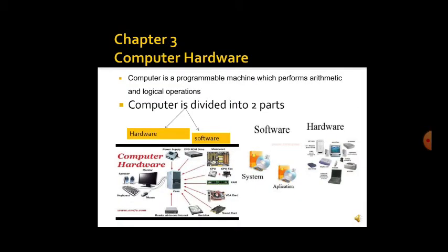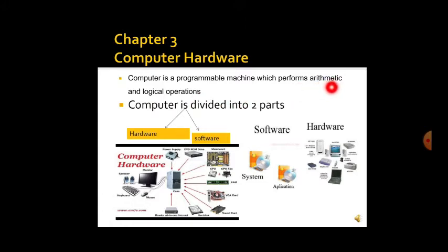We are doing Chapter 3, that is computer hardware. A computer is a programmable machine which performs arithmetic and logical operations. Arithmetic operations include addition, subtraction, multiplication, and division. Logical operations are comparisons between two numbers.